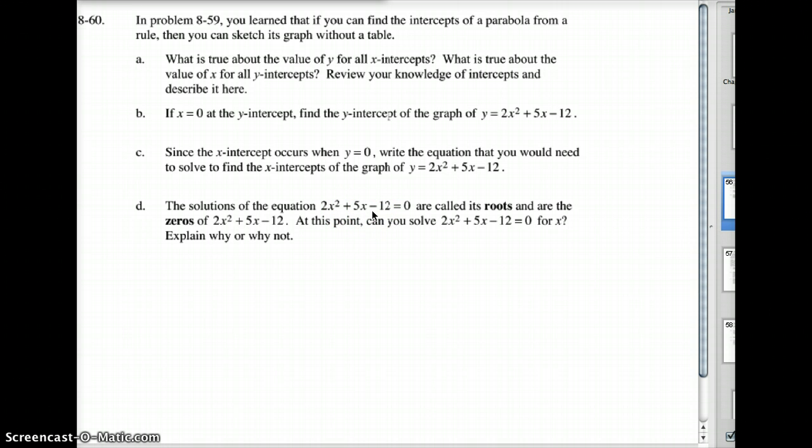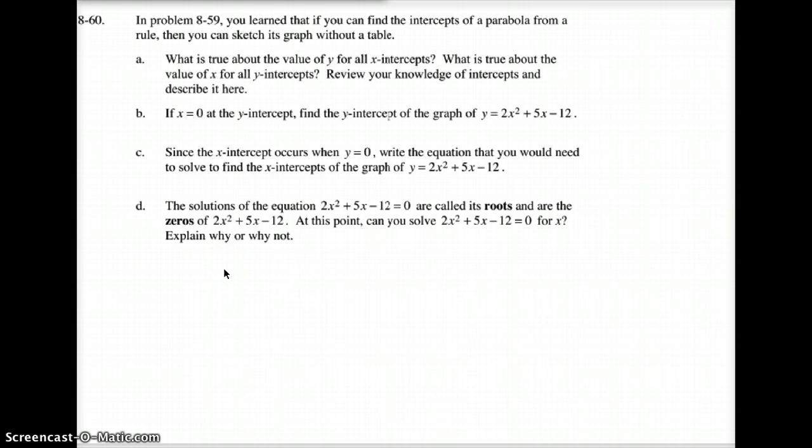2x squared plus 5x minus 12. Now, if you plug this into your generic rectangle, your diamond and rectangle, and you solve, we're going to get the factors of y equals, let's see if I can figure this one out quickly. It's going to be 2x minus 3 and x plus 4.